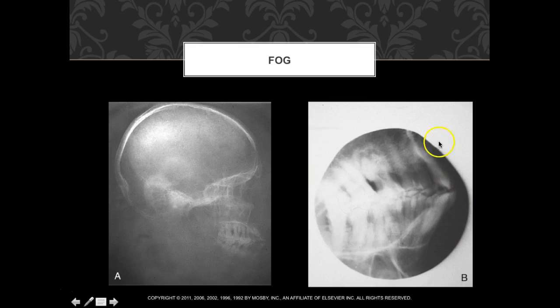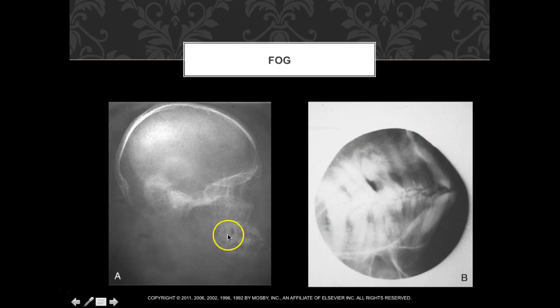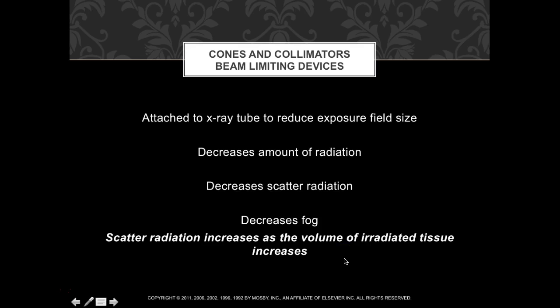Using a cone or collimator (beam-limiting device) reduces fog. Collimating tightly allows visualization of fine lines needed to identify fractures — comparing a fogged image to one taken with a cone shows dramatically better detail. Cones attach to the x-ray tube to reduce exposure field size, decreasing both total radiation and scatter radiation, which reduces fog. Scatter radiation and fog are used largely interchangeably.